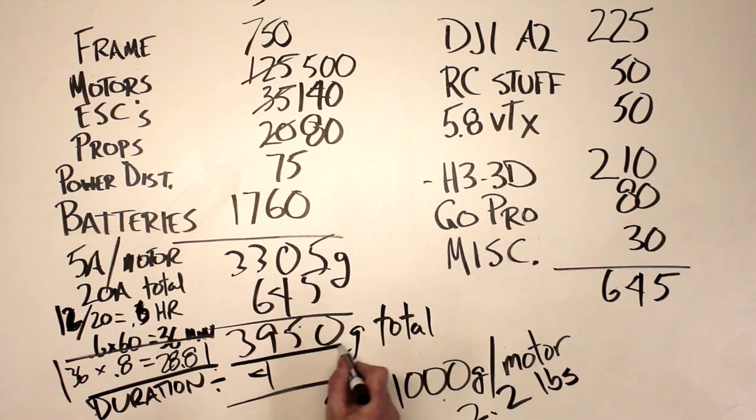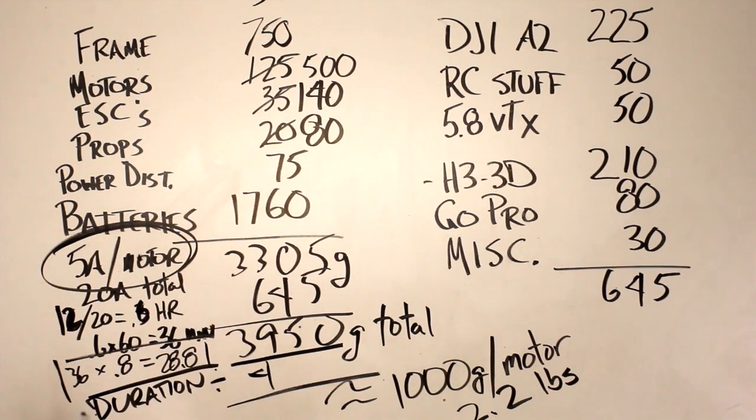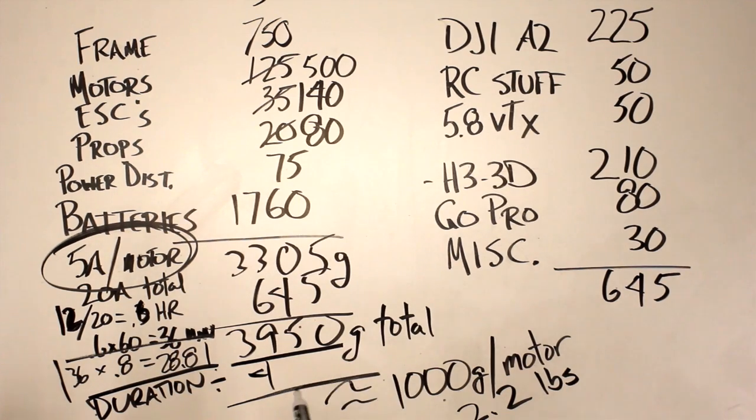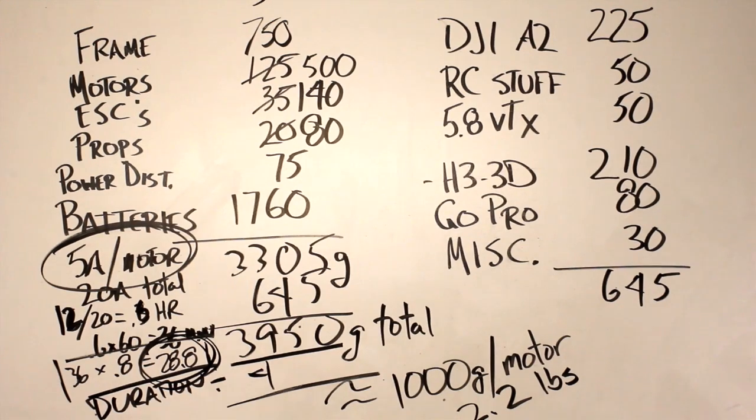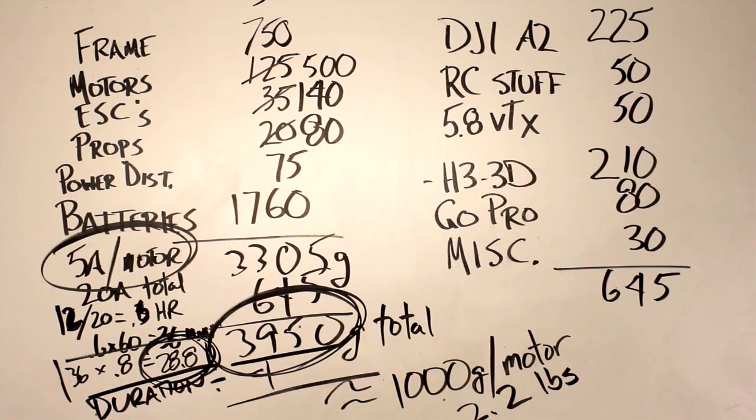That's the target duration for how long the helicopter should fly with this whole scenario in place. So if the weight of the helicopter comes in at or below 3,950 grams, and if the motors are able to make about 1,000 grams each at 5 amps per motor, when you multiply it by 4, you get 20 amps total, that's what the helicopter should draw when it's hovering. And then you take your 12,000 milliamp hours of capacity and divide it by your amps, so it's 12 divided by 20. That gives you 0.6 hours, but you're only going to draw your batteries down 80% of full capacity, so we should be looking at 28.8 minutes if all of this works the way it's supposed to work, and if I don't overbuild the helicopter, make it heavier than it should be. This is the first goal, we have to come in at or below that weight.